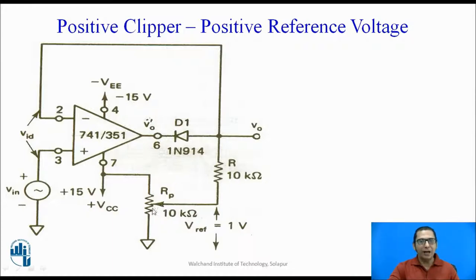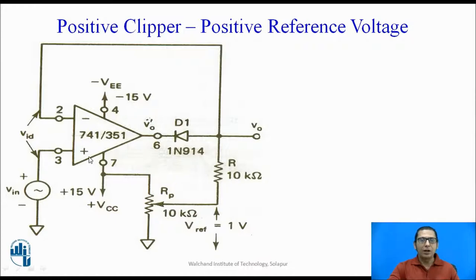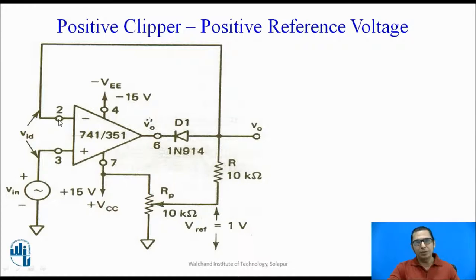The value of Rp is adjusted such that the reference voltage at this point is equal to one volt. The signal to be shaped, that is the input signal, is applied to the non-inverting terminal of the op-amp. And as with most circuits, there is a feedback path or closed loop path at the inverting terminal of the op-amp. So, how does this circuit work?